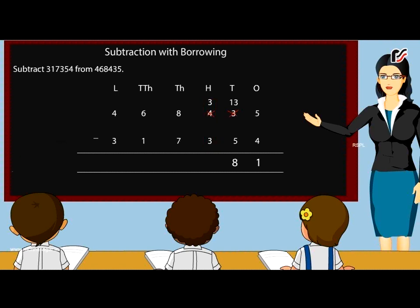subtract the hundreds. 3 minus 3 equals 0. Write 0 in the hundreds column. Next, subtract the thousands. 8 minus 7 equals 1. Write 1 under the thousands column. Next, subtract the ten thousands. 6 minus 1 equals 5. Write 5 under the ten thousands column. Finally, subtract the hundred thousands. 4 minus 3 equals